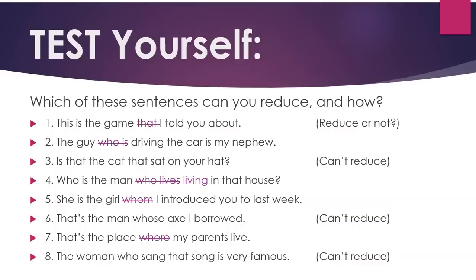Here are the answers. 1. This is the game I told you about. 2. The guy driving the car is my nephew. 3. Is that the cat that sat on your hat? — You can't reduce this one. 4. Who is the man living in that house? 5. She is the girl I introduced you to last week. 6. That's the man whose axe I borrowed. 7. That's the place my parents live. 8. The woman who sang that song is very famous — you can't reduce that one without changing the meaning.